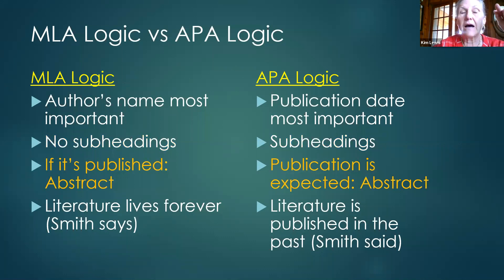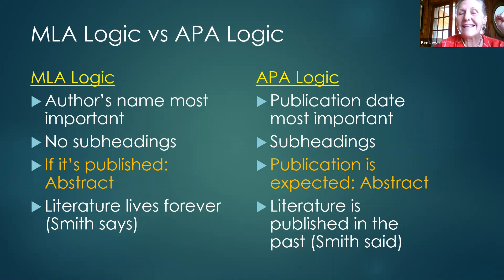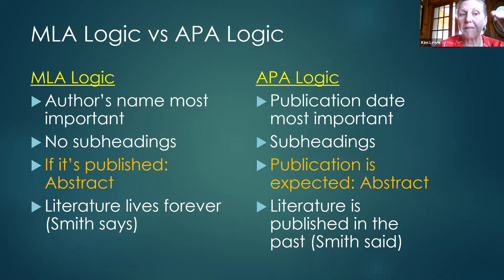In MLA, there's only a need for an abstract if your work is going to be published, so you don't have to worry about it. APA comes out of the sciences mostly, so they assume there may be experiments and things will be published, and they expect an abstract.